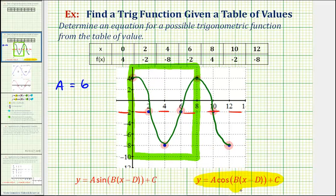Next, the value of b is affected by the period. We can see along the x-axis, after 8 units, the graph starts to repeat itself. So the period is 8 units, which means 2 pi divided by b must equal 8.